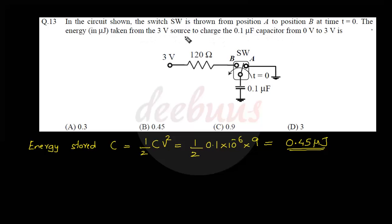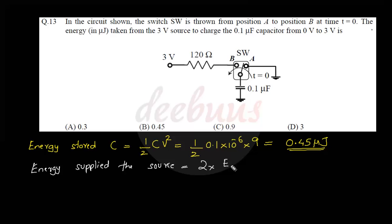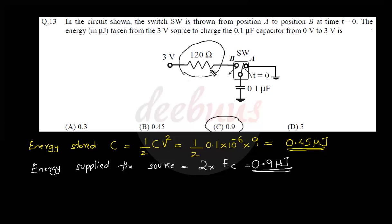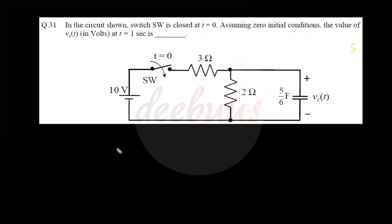However, the question asks for energy taken from the 3 V source, not just energy stored. The energy supplied by the source is actually 2 times the energy stored by the capacitor: 0.45 × 2 = 0.9 μJ. The balance 0.45 μJ is dissipated across the 120 Ω resistance. Remember: when a battery charges a capacitor, only half the energy is stored and the rest is dissipated in resistance.